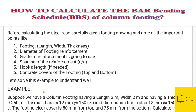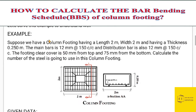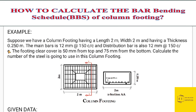Let's solve this example to understand. Here we have a column footing with a length of 2 meters. This is the plan view of the column and this is the section view. The section A is cut here. We have length 2 meters and width 2 meters, with a thickness of 0.250 meters as seen in the section view. This is the thickness and depth of the column footing.